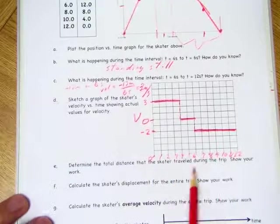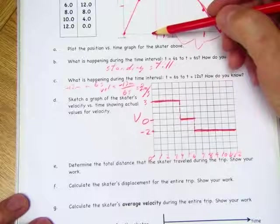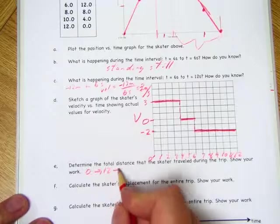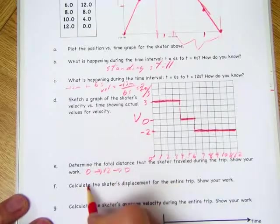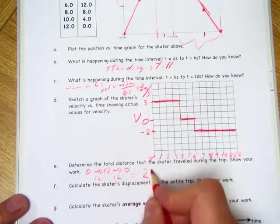Determine the total distance that the skater traveled during the trip. Show your work. We know that the skater went from 0 to 12, stood still, and then came back to 0. So it went 12 meters, then 12 meters, that's a total of 24 meters.